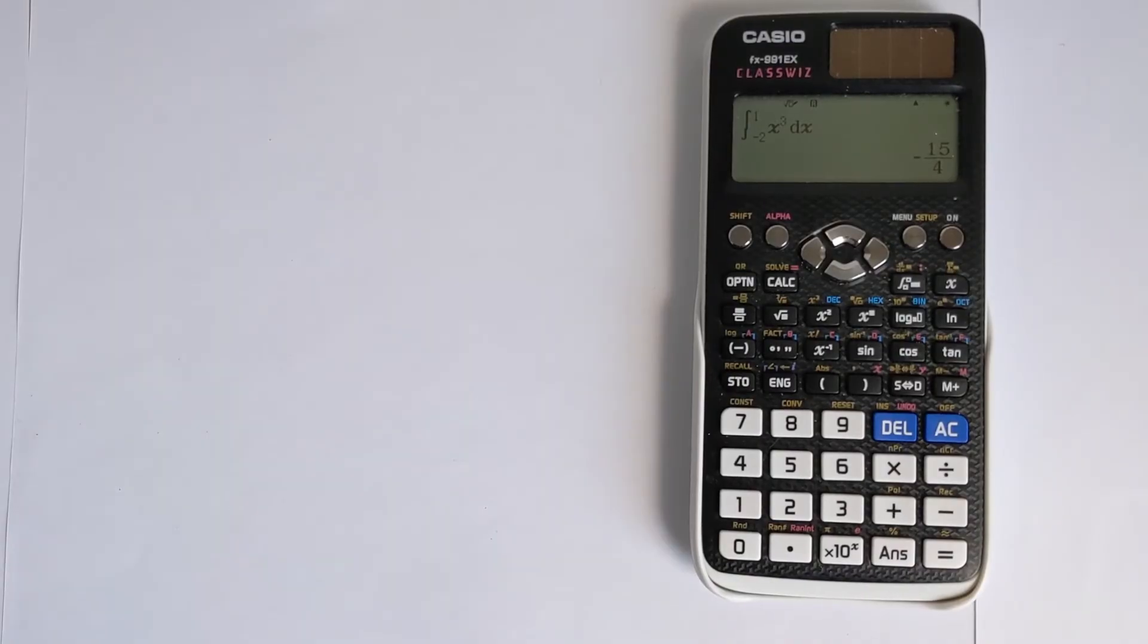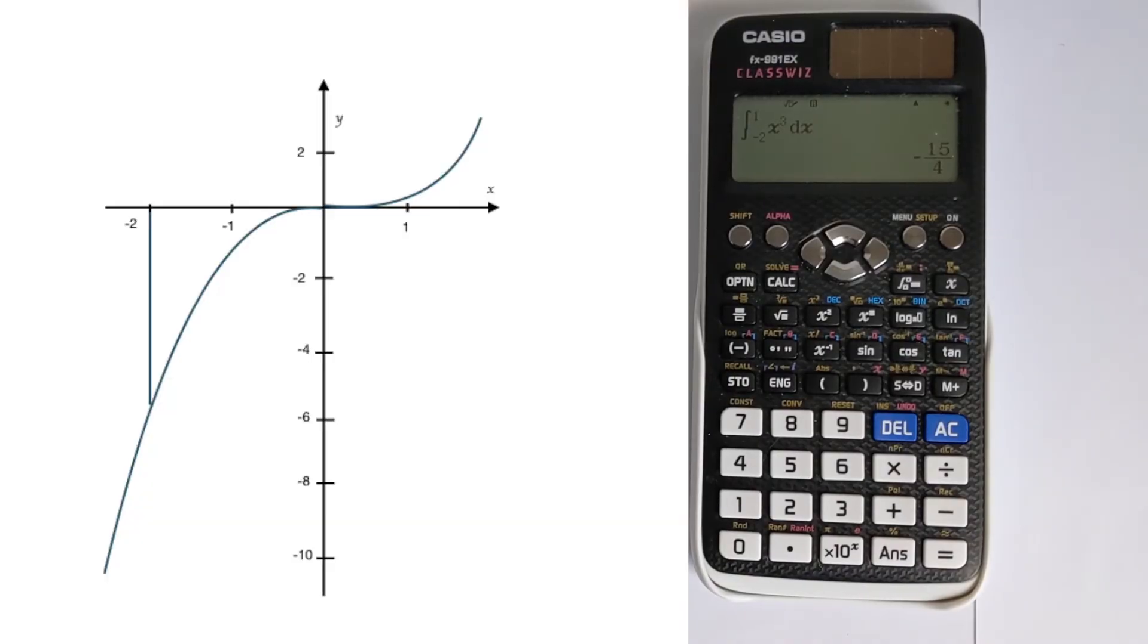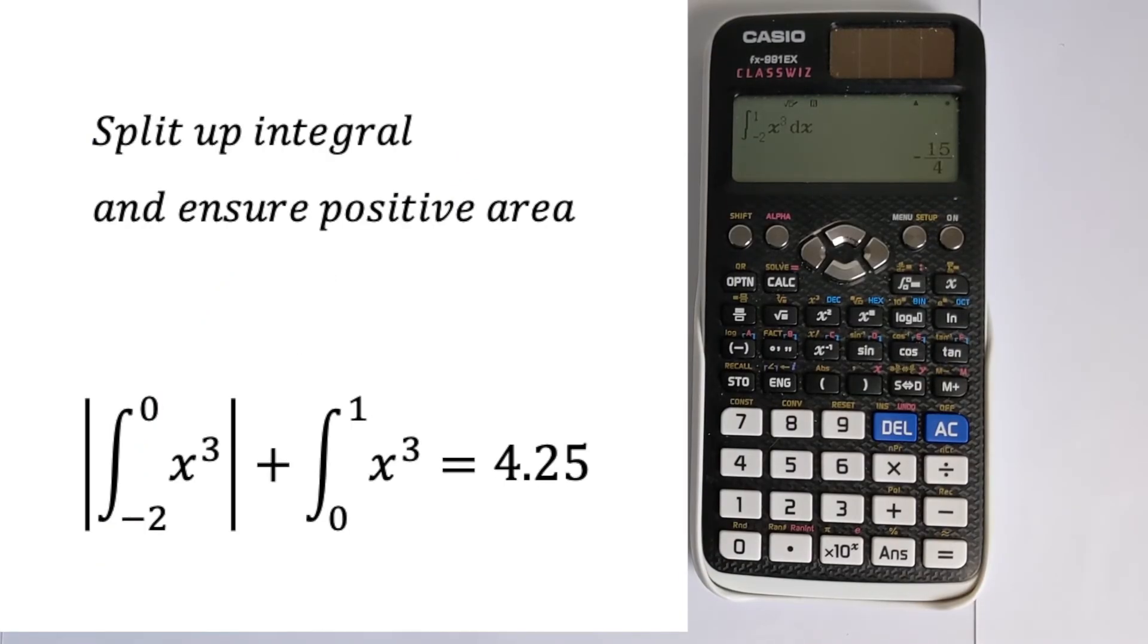So to do this correctly we need to look at the graph. And I've plotted the graph here. And you can see that it's crossing the axis. And therefore we need to split it up. So from minus two to zero we'll get a negative area. And then from zero to one it'll be a positive area. So what we need to do is split it up.